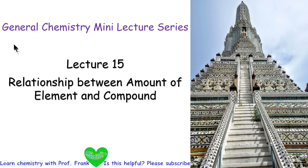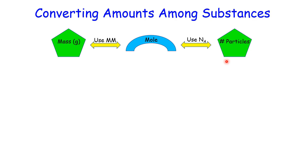Welcome back to General Chemistry Mini Lecture Series, Lecture 15: Relationship Between Amount of Element and Compound. Previously we already learned how to interconvert from the mass of a substance to the particles of the same substance, or vice versa.